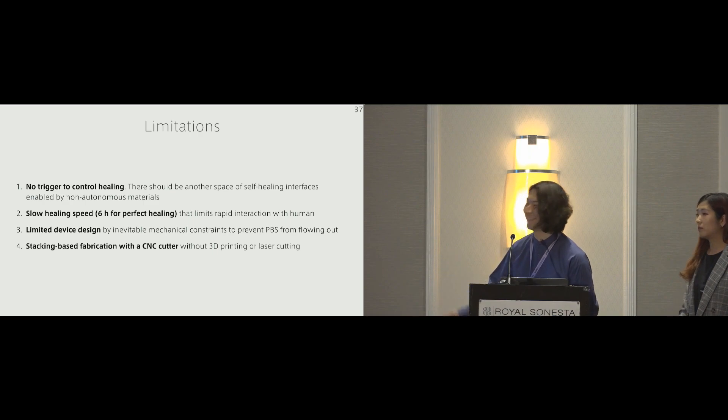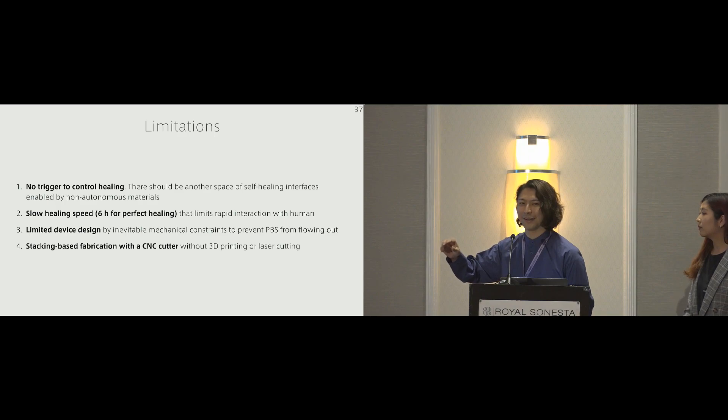The third limitation is the device design. PBS flows inside of the devices, so we always have to constrain the device with some stiffer material, like multi-walled carbon nanotubes PBS or other silicones, which decreases the design freedom. The last limitation is the stacking-based fabrication method we are using. The reason why we do not use 3D printing processes is after extrusion, in general, it is really hard to keep the shape of the self-healing materials into the same shape. And the reason why we didn't use laser cutting processes is the heat generated from laser cutting will drastically ruin the self-healing property of the polymer.